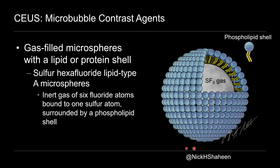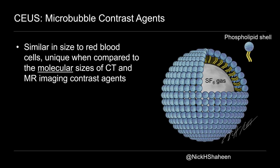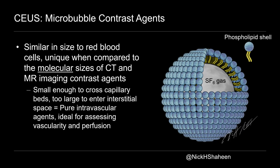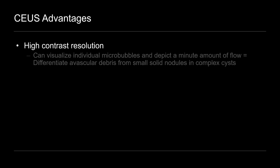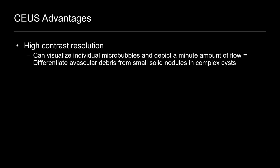And thank you to Dr. Nick Shaheen for providing this excellent diagram. You can follow him on Instagram at Nick H. Shaheen. So what's interesting about these contrast agents is they are similar in size to red blood cells, which makes them larger than the molecular sizes of contrast agents we use for both CT and MRI. So that means they're small enough to cross capillary beds, but that's where they stay — they're too large to pass beyond them into the interstitium. So they're purely intravascular agents, which makes them ideal for assessing vascularity and perfusion. So that's different than the iodinated contrast we use in CT or the gadolinium we use in MRI. Those agents will cross into the interstitium, and that explains why sometimes things enhance differently on contrast ultrasound than they do on CT and MRI.